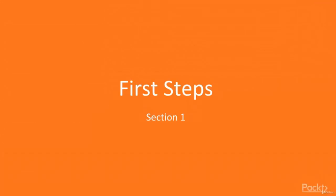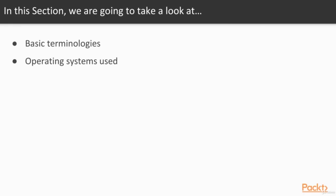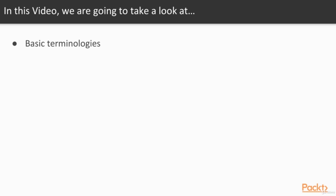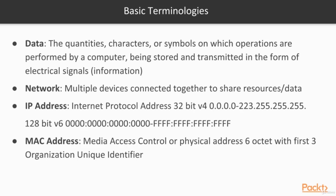Welcome to Ethical Hacking for Beginners. In this section we are going to take a look at some basic terminologies used in this course and also some operating systems. Data can be defined as the quantities, characters, or symbols on which operations are performed by a computer, being stored and transmitted in the form of electrical signals. We can also call this information.